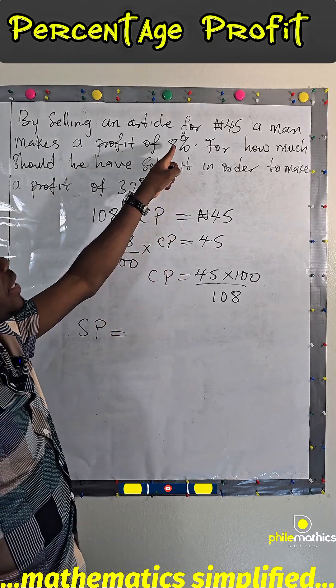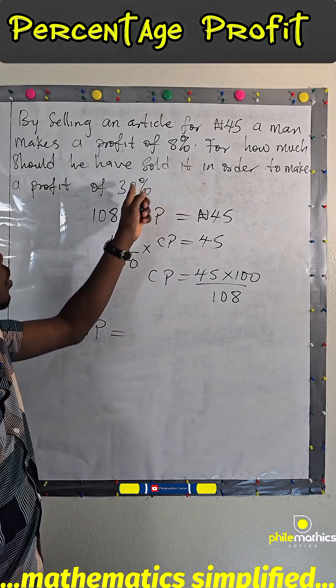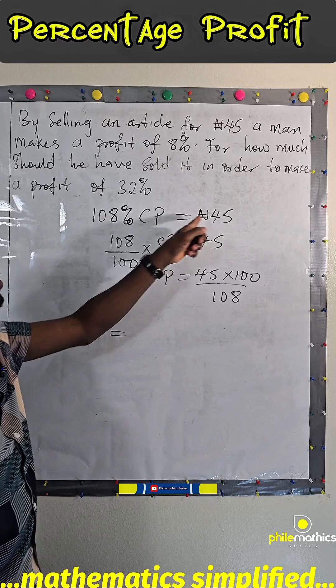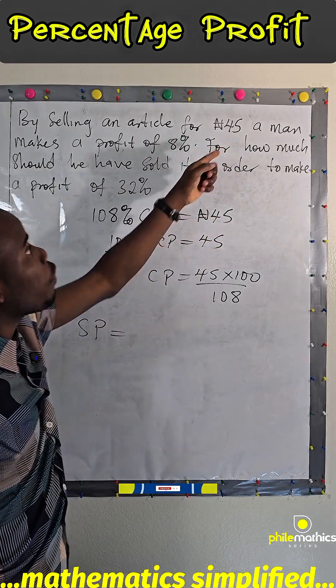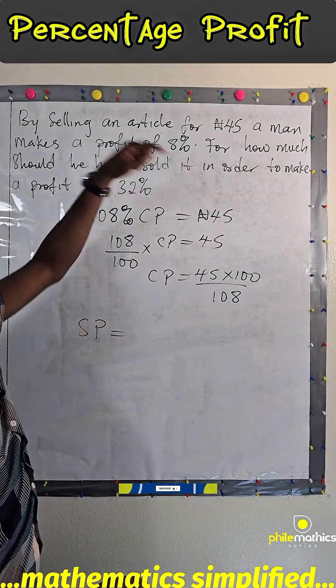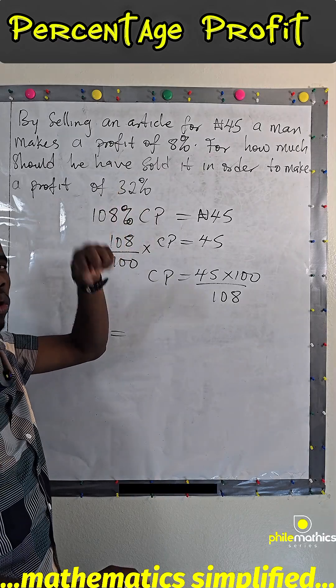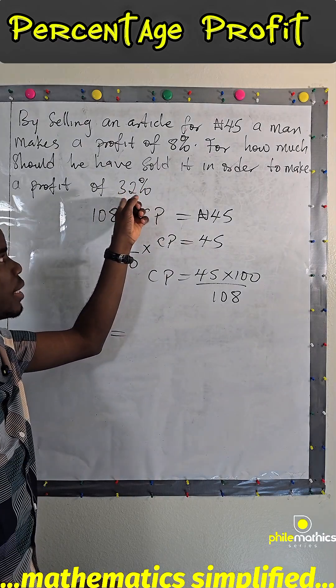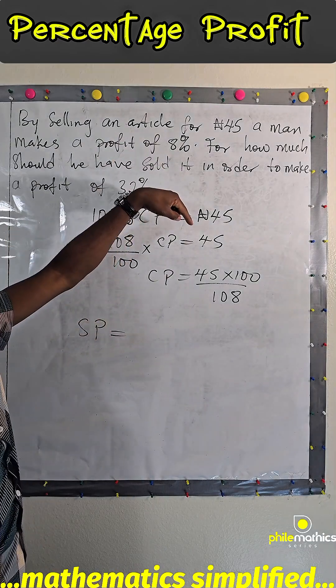You know, when he made 8%, we look for 108% of the cost price to get this amount. To find what he will sell it in order to make 32%, we have to look for 132% of the cost price.